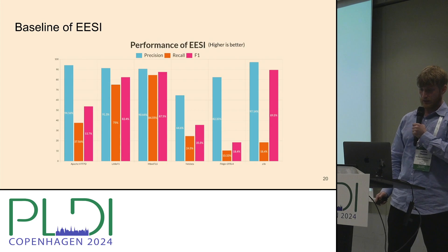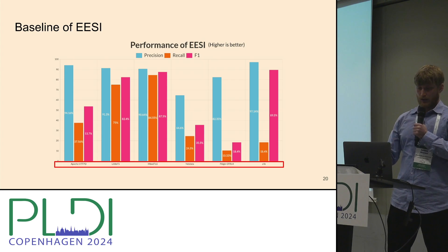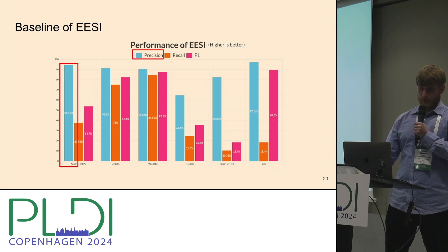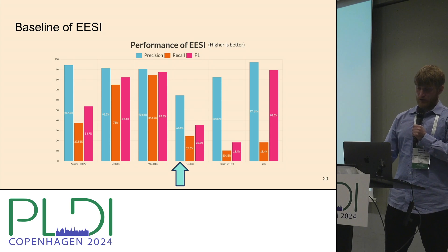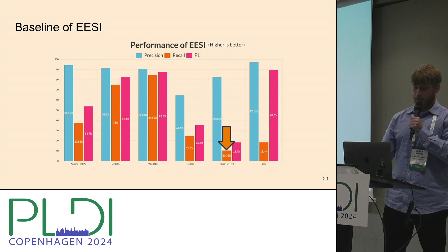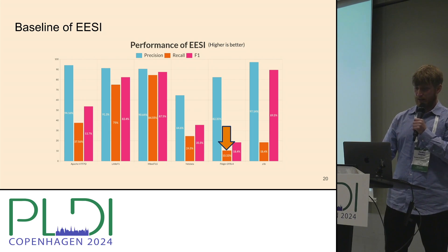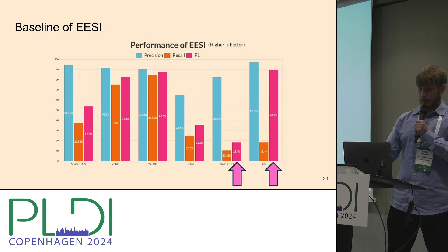For the baseline of EasY — higher is better — the six benchmarks are listed at the bottom. The left bar is precision, the middle bar is recall, and the right bar is F1. Precision ranges from just under 65 to 97 for zlib. Recall is as low as 10.3 for Pidgin, which has the highest number of third-party functions that can't be statically analyzed by EasY. Embed TLS has the highest recall. F1 ranges from 18.4 to 89.5.